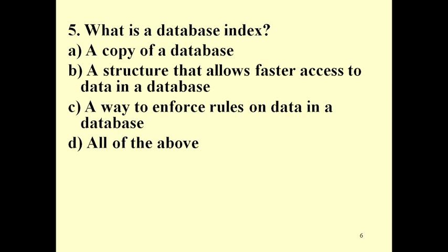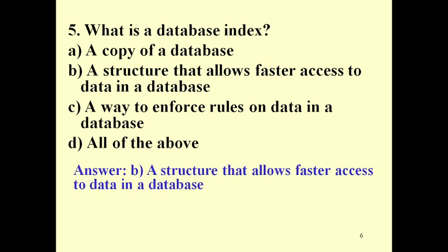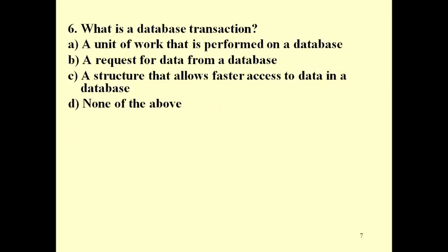Question 5: What is a database index? A. A copy of a database. B. A structure that allows faster access to data in a database. C. A way to enforce rules on data in a database. D. All of the above. Answer: B. A structure that allows faster access to data in a database.